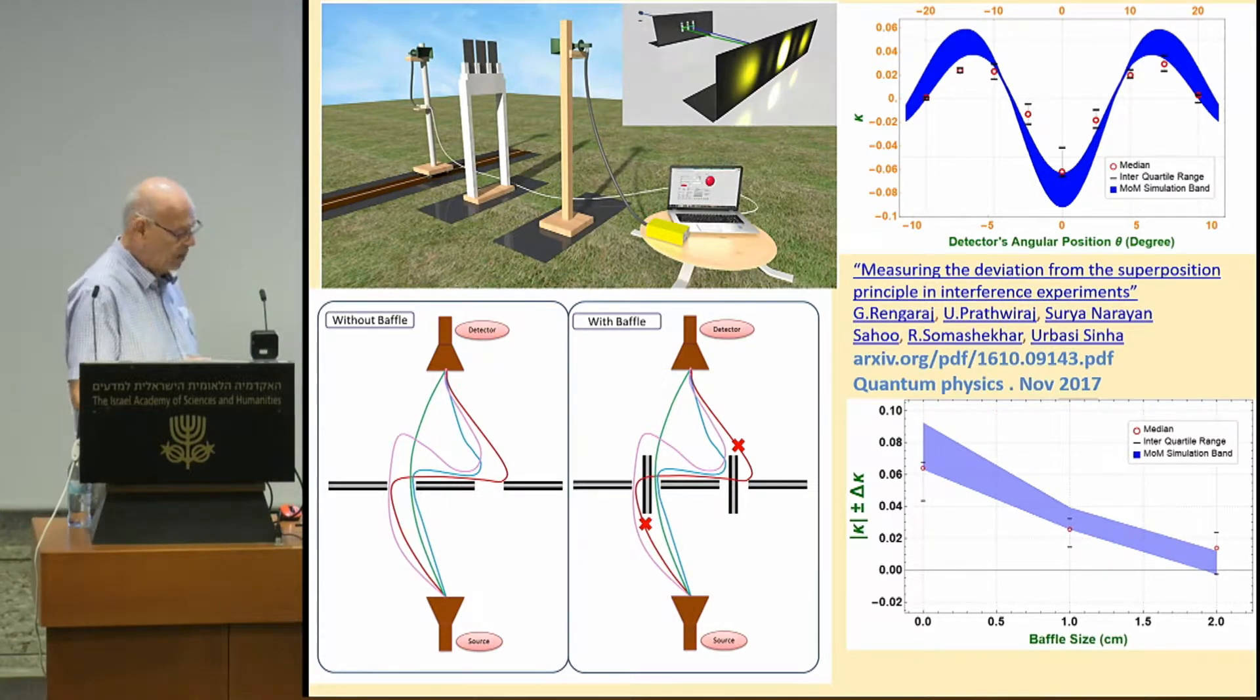So Feynman path integral in this particular experiment allows you to include contribution from non-classical trajectories. And the end result is that the Sorkin parameter is far from zero.